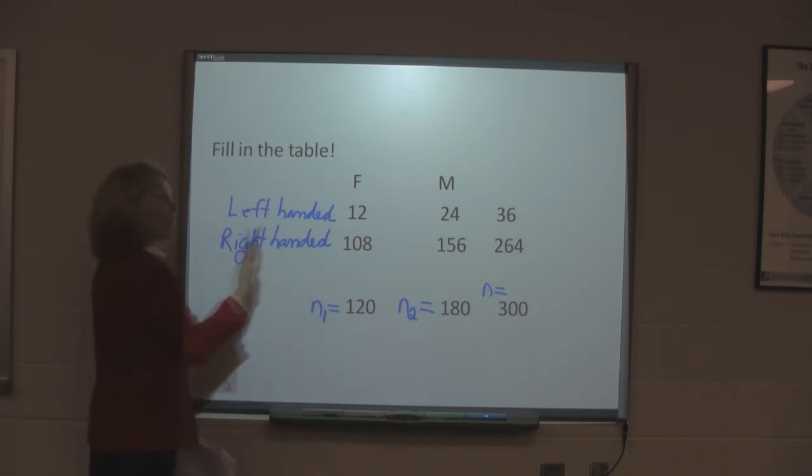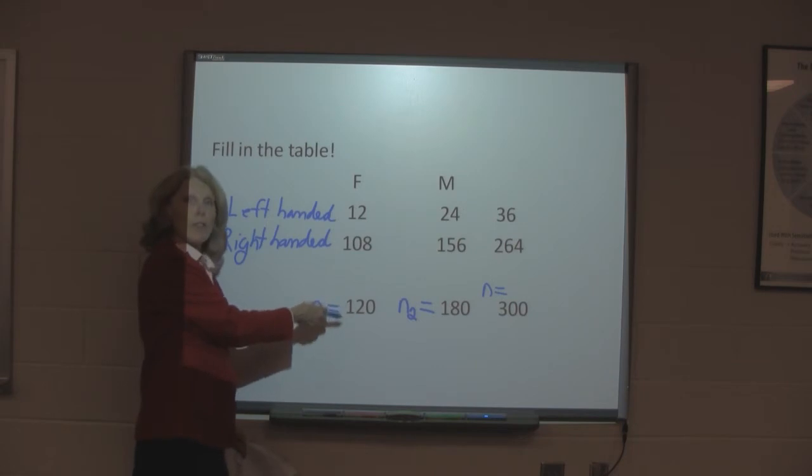Now, we find when we do our sample, that out of the 120 females, as we mentioned, 12 of them were left handed. So, then the rest are right handed. So, armed with the 12 and the 120 we can fill in the 108.